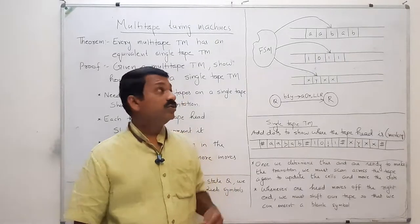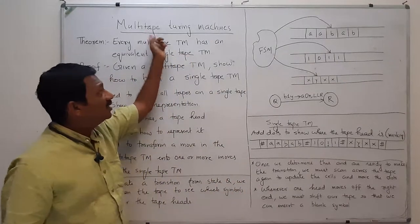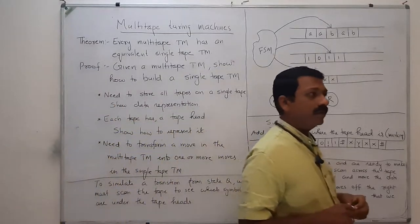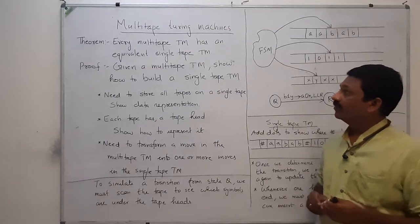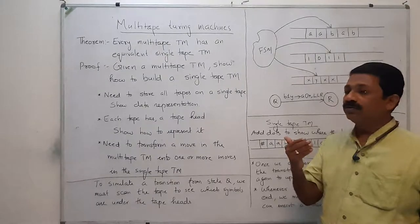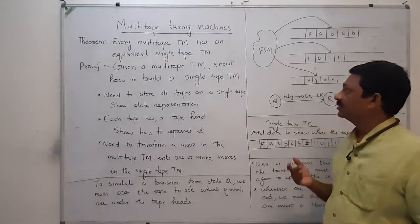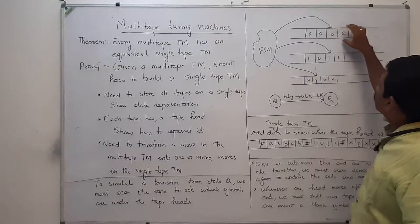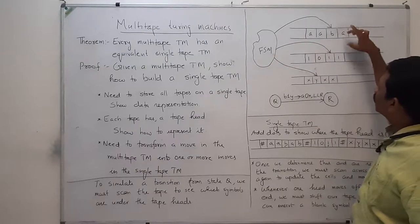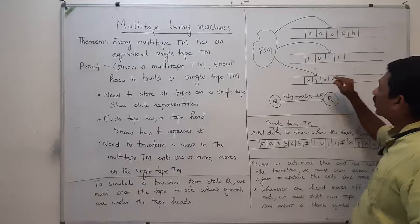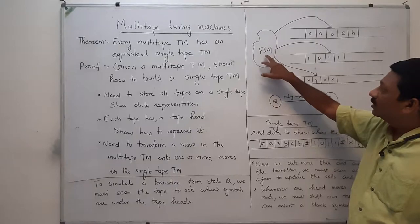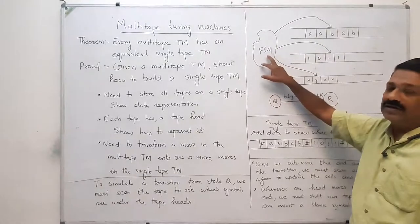Good morning. Today we are going to discuss multi-tape Turing machines. Normally a Turing machine has only a single tape, but we can also have a Turing machine with multiple tapes. Here this Turing machine is having three tapes — one, two, and three. And here this is the finite control, and that finite control is having three tape heads.